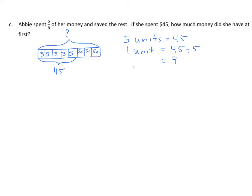Now, we need to find 8 units. So that's 8 times 1 unit or 8 times 9. And that's 72. So she had $72 at first. And again, we would write a statement.